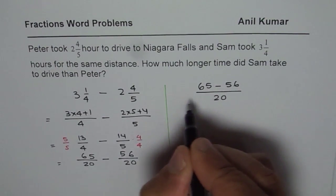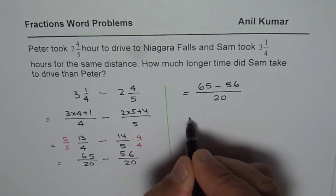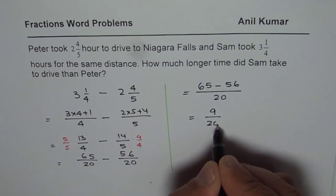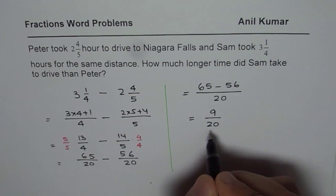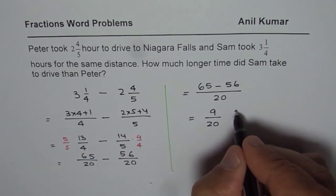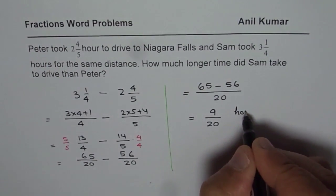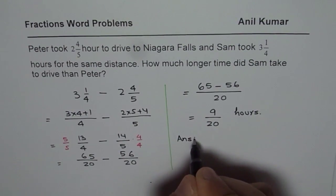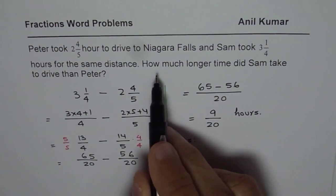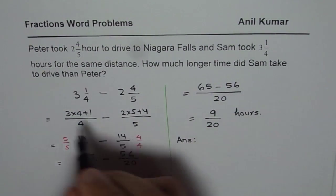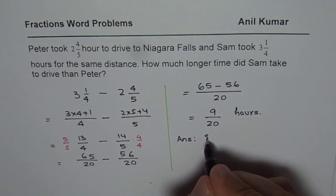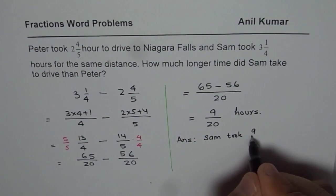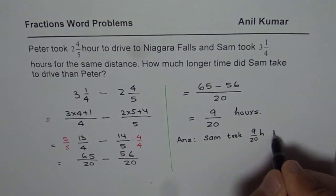20 is the common denominator. 65 minus 56 is 9, so we get 9 over 20 as the time. Now this time is in hours. When you write down the answer to how much longer did Sam take to drive than Peter — Sam took 9 over 20 hours more.